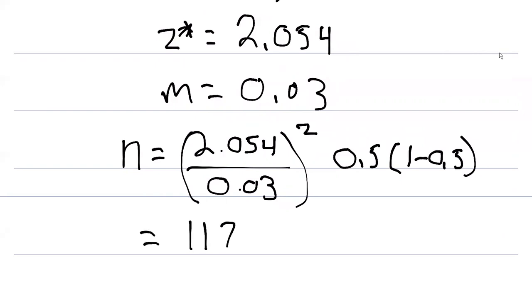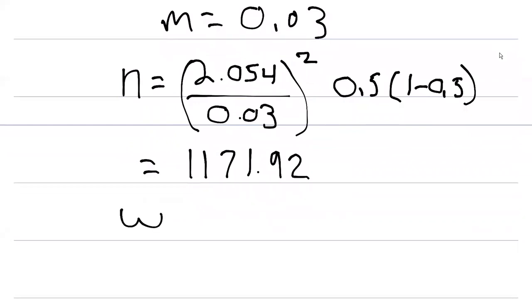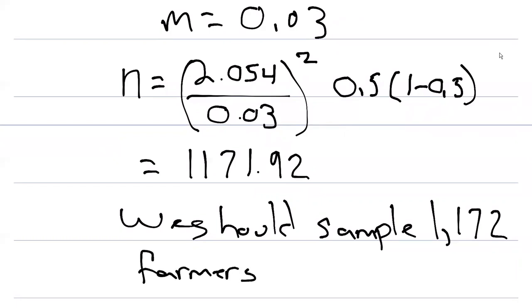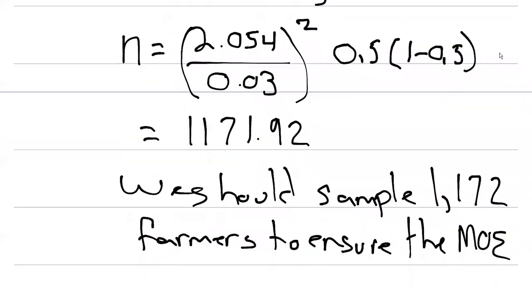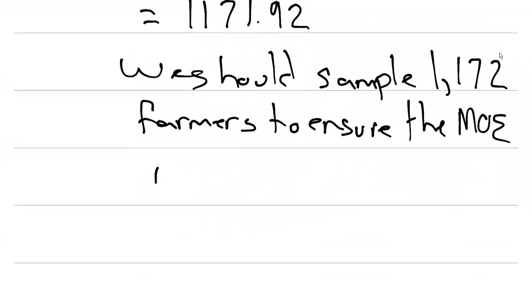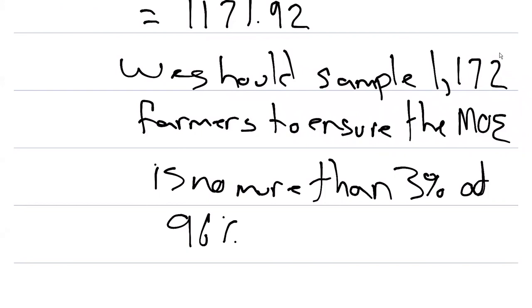We should get 1,171.92 farmers. Let's round up this 1,171.92 to 1,172. So we should sample 1,172 farmers to ensure the margin of error, MOE, is no more than 3% at 96% confidence.